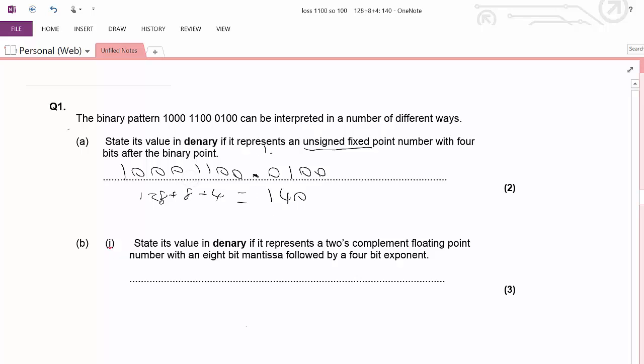We've also got, after the binary point, a quarter. So 140.25.